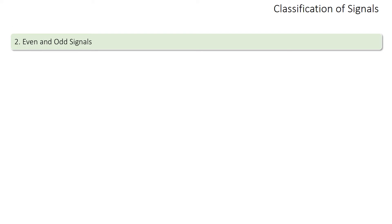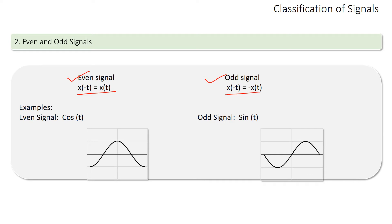Even and odd signals are classified like this. A signal x(t) is said to be an even signal if x(-t) equals x(t), and a signal is said to be an odd signal if x(-t) equals -x(t). These are the classic examples of even and odd signals.